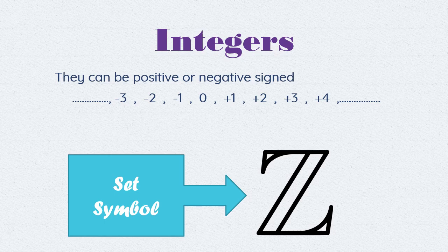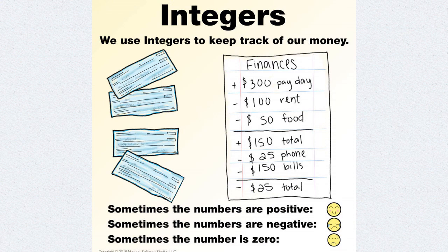Integers include: negative 3, negative 2, negative 1, 0, positive 1, positive 2, positive 3, etc. Their symbol is Z. For example, we use integers to keep track of money — if the total is minus 25, it means I have no money and need 25 dollars more. We can also use integers in weather.